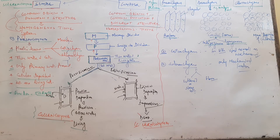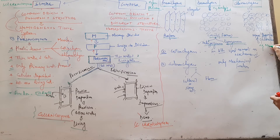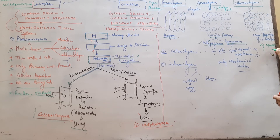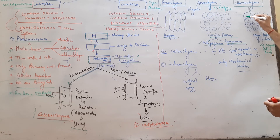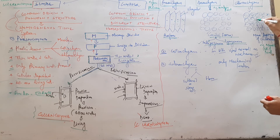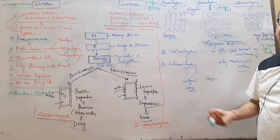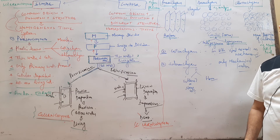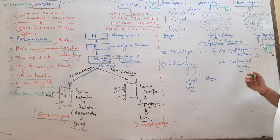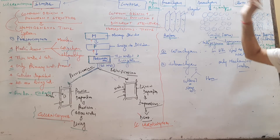Another modified form of parenchyma is chlorenchyma, present in the mesophyll cells of a leaf. In chlorenchyma cells there is more deposition of chloroplasts. Chloroplasts contain chlorophyll pigment which helps in photosynthesis, reducing CO2 to produce more carbohydrates. This is the modification called chlorenchyma. This is all about parenchyma.